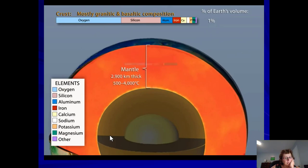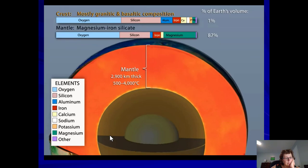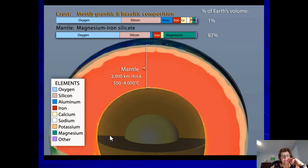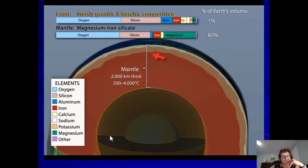Below the crust is the mantle, composed of the same elements but a different proportion, with increasing amounts of the heavier elements in the rock. The chemical composition of the 2,900 kilometer thick mantle varies little from top to bottom, but there are distinct physical variations due to temperature and pressure differences. The uppermost mantle is relatively cool and brittle and ranges from 50 to 120 kilometers thick.